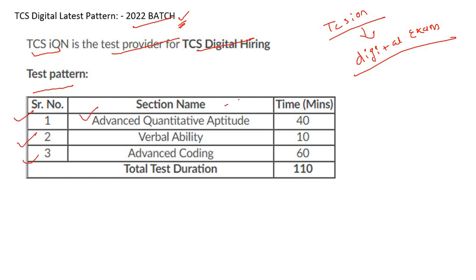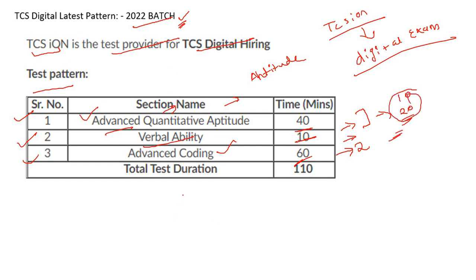The test pattern basically consists of three parts. The first part is Advanced Quantitative Aptitude. The second section is Verbal Ability with a time of 40 minutes. The third is Advanced Coding with a time of 60 minutes — there are two coding questions. The exact number of questions depends on the TCS team, whether they add 10 or 20 questions, but the total test duration is 110 minutes.